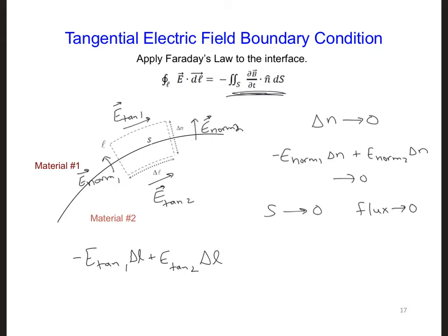So then we wind up with E tan 1 and E tan 2, this is all equal to zero. And after simplifying, we can cancel the delta l's, and we can move one term to the other side. We get E tan 1 is equal to E tan 2.